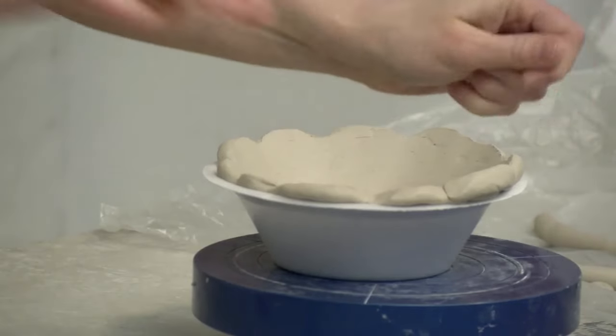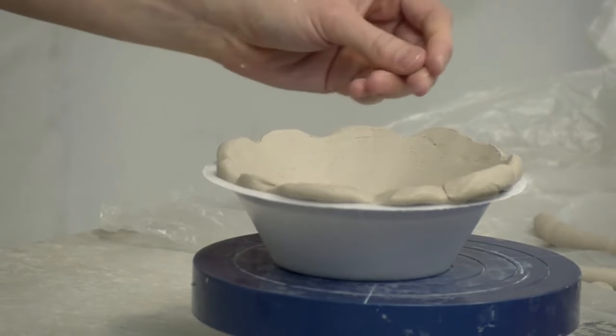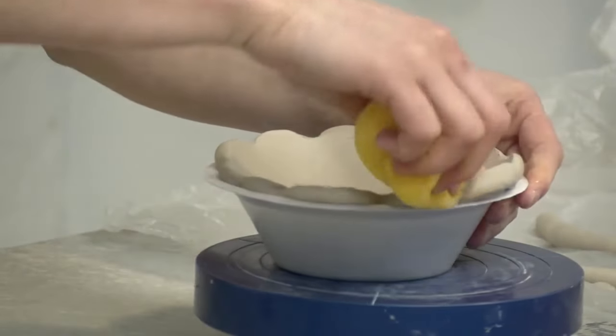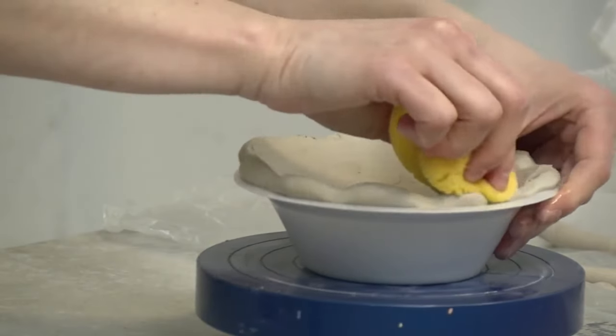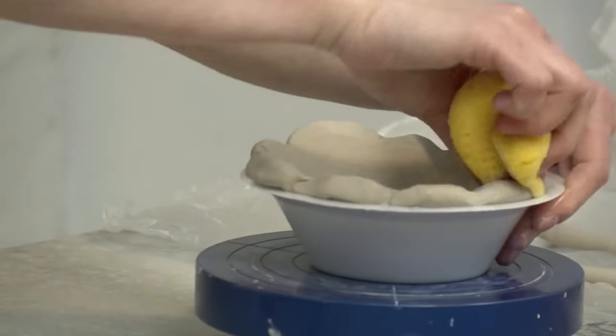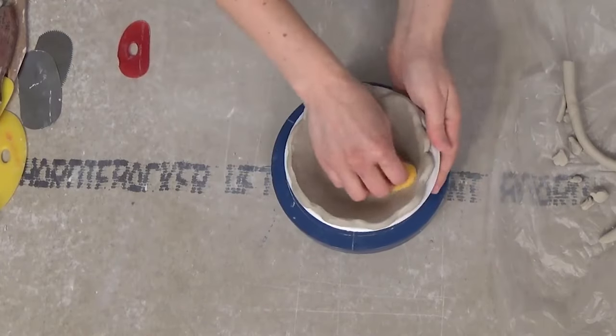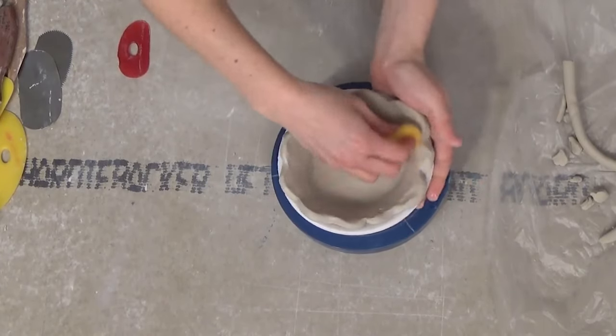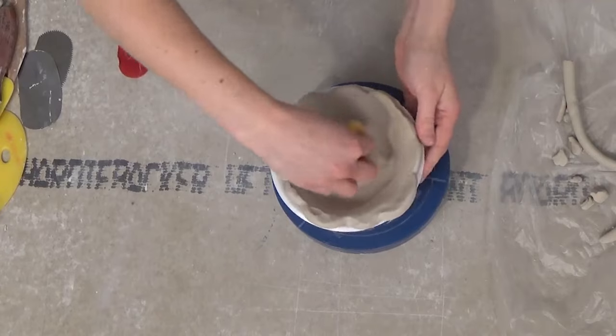There we go. If this isn't smooth around the edge, you could use a sponge and smooth that out. I like the variation there, but if not you could add another coil and actually make that flat.